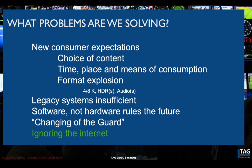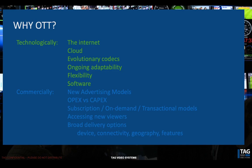The biggest problem we're trying to solve is having ignored the internet. Technologically, we have the internet available to us, and it brought forward the cloud. These two things are very interesting for media transport. We have evolutionary codecs which continue to improve, and systems need to be dynamic, flexible, and software-based. Commercially, OTT offers new advertising models and a whole new path to the viewer. We move from CAPEX to OPEX expenditures. We can offer subscription services, on-demand services, and transactional models like VOD. This means we can access new viewers and deliver through a broad variety of device choice, connectivity choice, geographical flexibility, and viewing features.